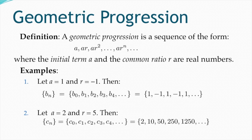As an example, let a=1 and r=-1. For sequence b(n): b0 = a = 1, b1 = a·r = 1·(-1) = -1, b2 = a·r² = 1·(-1)² = 1. So this sequence alternates: 1, -1, 1, -1, and so on.